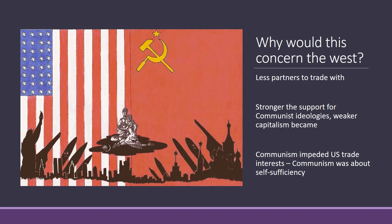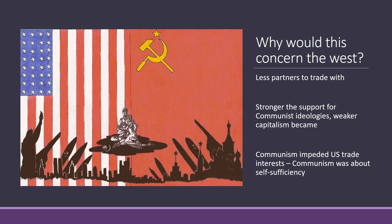The US were opposed to communism. Ideologically, they opposed it because they said it was an authoritarian dictatorship. However, it also limited the scope for American companies to go overseas and trade. So the stronger the support for communist ideologies became, the weaker capitalism became. To understand modernization theory, you need to understand a little bit more about functionalism.